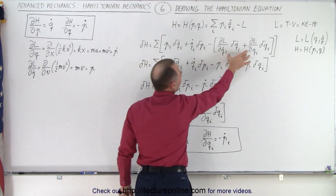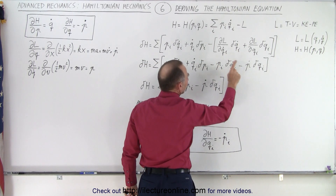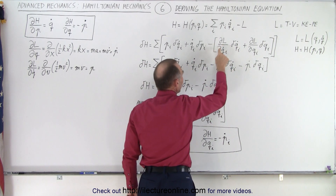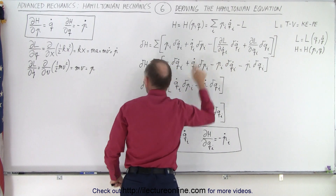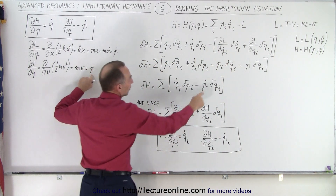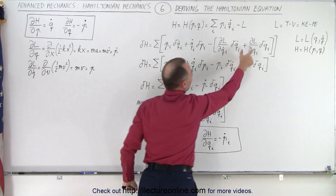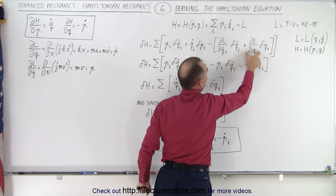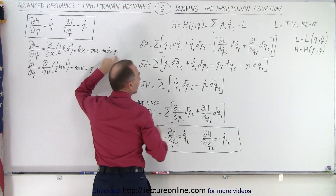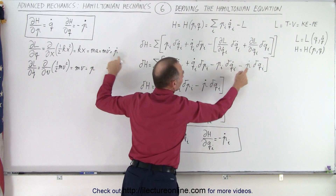Notice that we subtract these two terms, so we get a negative sign. Then we realize that the partial derivative of the Lagrangian with respect to q-dot is equal to p, the momentum, so we replace this with the momentum. And the partial derivative of the Lagrangian with respect to q gives us p-dot, so we replace this with p-dot.